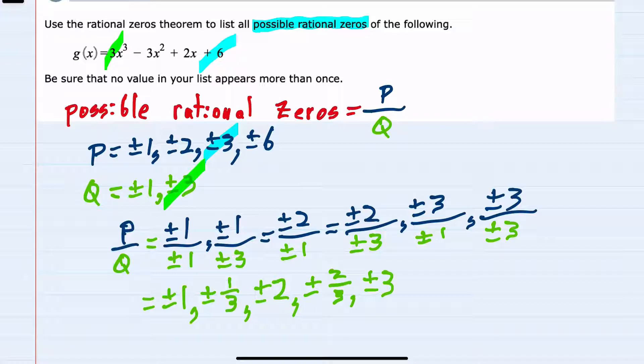This would simplify to one, but I already have one represented in my list. We were told to make sure that it only appears once for each possible zero, so I'm not going to list this one again, just noting that it's a duplicate. I can now move on to my last p, which is six.